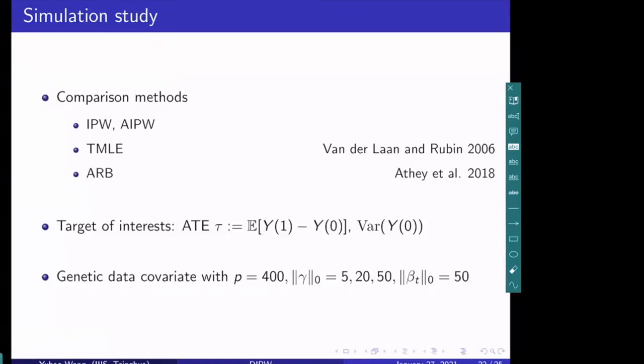We performed simulation studies to compare against previous methods, including IPW, AIPW, TMLE (developed by Mark van der Laan and Donald Rubin in 2006), and the ARP estimator proposed by Semenova and Chernozhukov. For the target of interest, we consider performance in estimating both the average treatment effect and the variance of the potential outcome Y(0). For the data, we use a covariate vector with dimension P = 400, and we generate treatment assignments and response functions by setting propensity model sparsity to 5, 20, and 50, and outcome regression sparsity equal to 50.